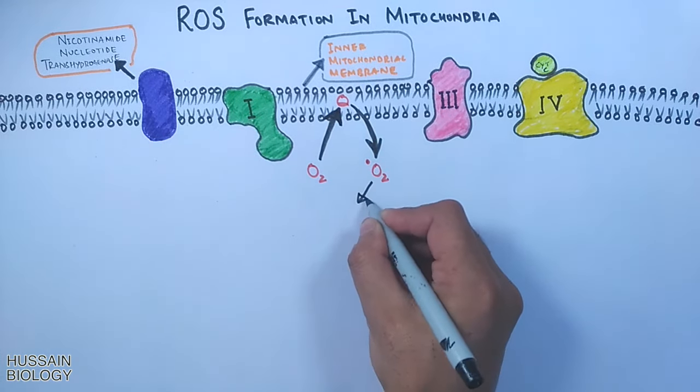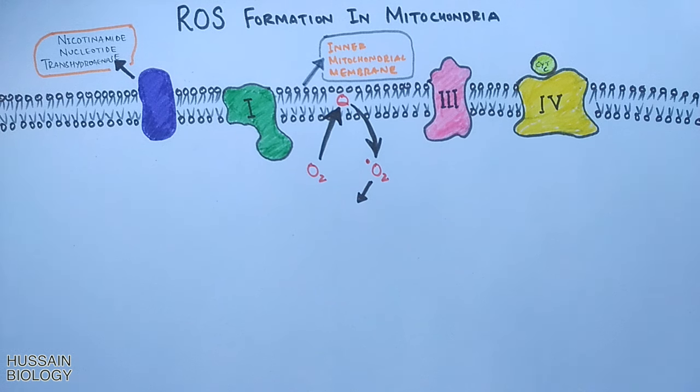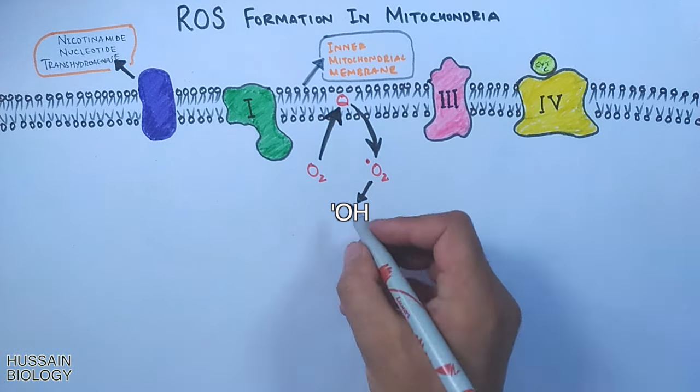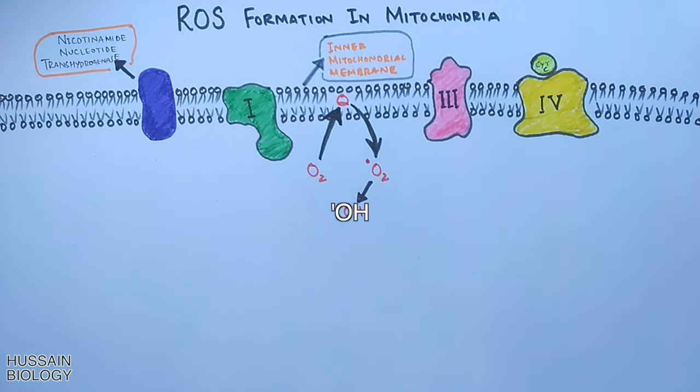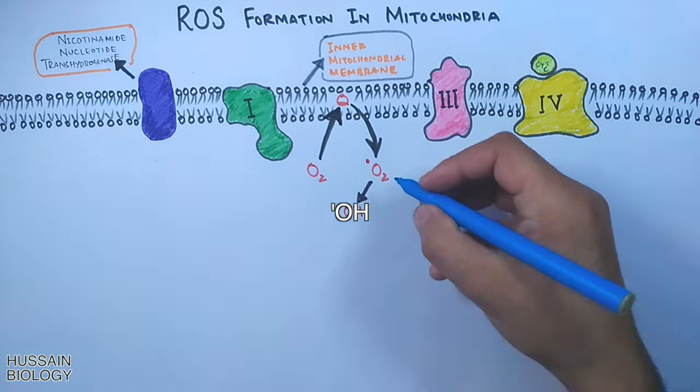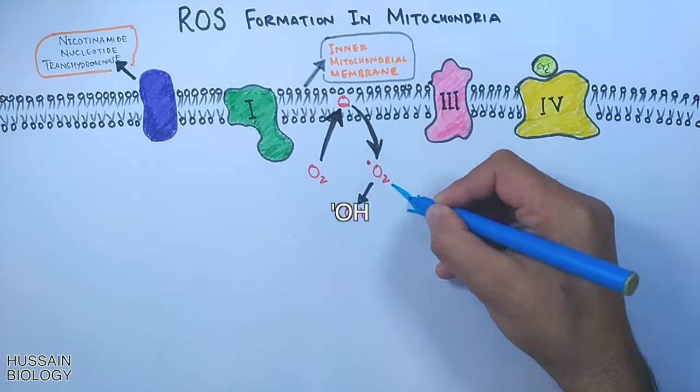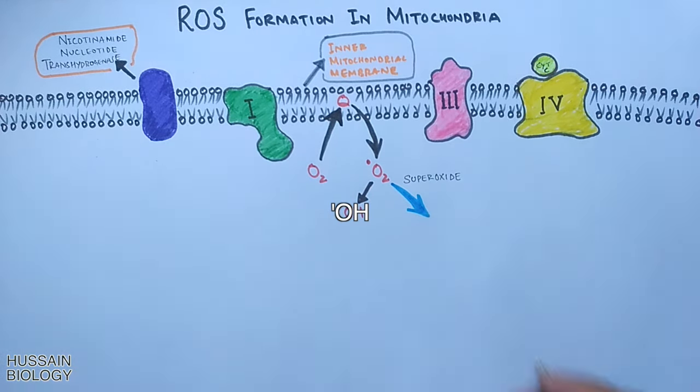The superoxide can further form highly reactive hydroxyl free radical through Fenton's reaction. On the other hand, the defensive mechanism comes into play: the superoxide dismutase acts on oxygen free radical and converts it into hydrogen peroxide.